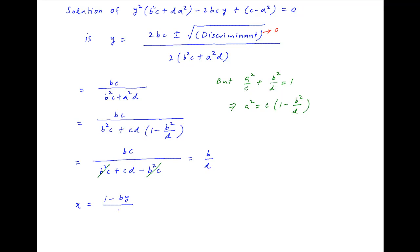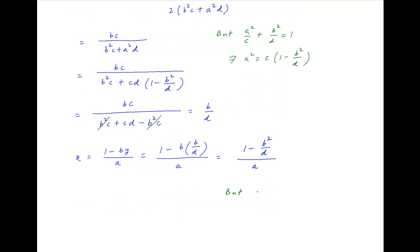Now, the value of x is equal to 1 minus by upon a. Substituting the value of y obtained above, we get x is equal to 1 minus b times b upon d, divided by a, which is equal to 1 minus b squared upon d, all divided by a. But we have obtained earlier that a squared is equal to c times, in brackets, 1 minus b squared upon d, and therefore 1 minus b squared upon d is equal to a squared upon c. Using this result, the value of x is equal to a squared upon c divided by a, which is equal to a upon c.